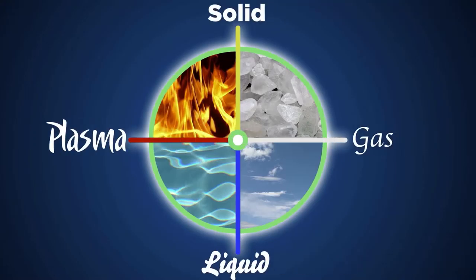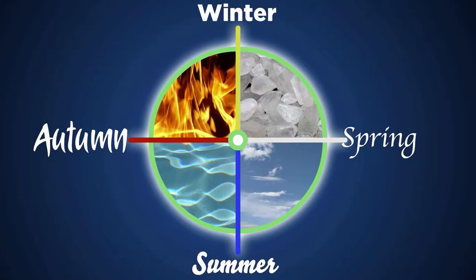We have four states of matter: solid, liquid, gas, and plasma. We have four seasons. Winter is earth, spring is air, summer is water, and autumn is fire.